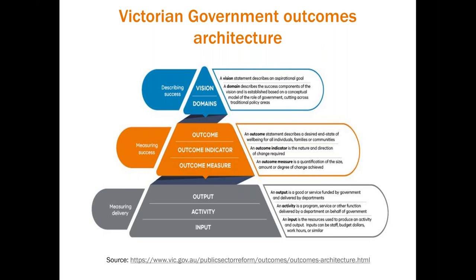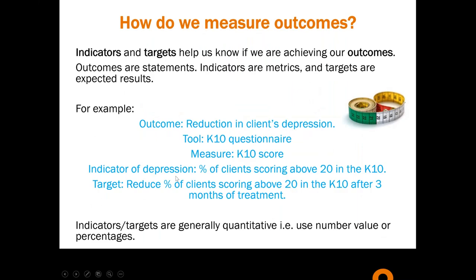The Victorian government's outcomes architecture uses slightly different terminology — what I've called an 'outcome' they call an 'outcome indicator,' and what I've called an 'indicator' they call a 'measure.' The rest of the world has gone another way, but I'll leave that with you and I'm happy to provide more clarification offline if anyone has questions about that.